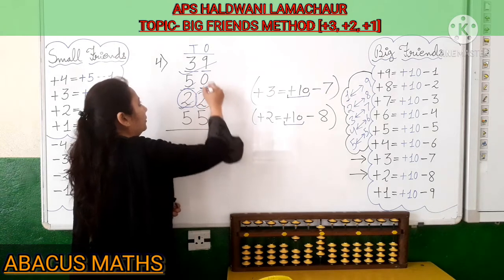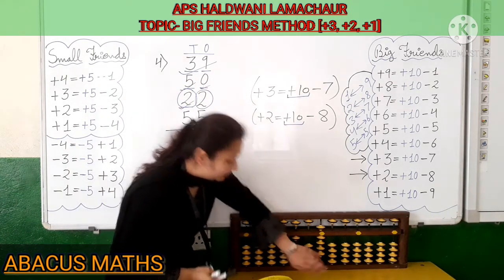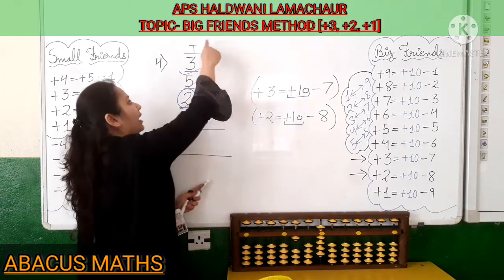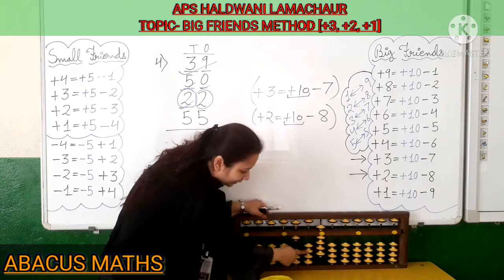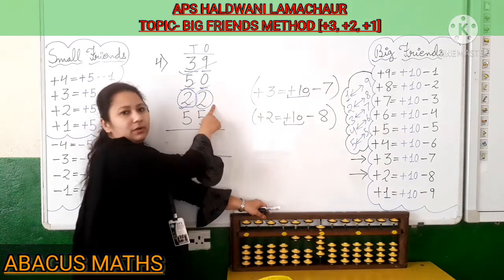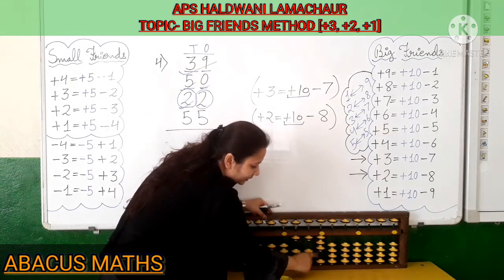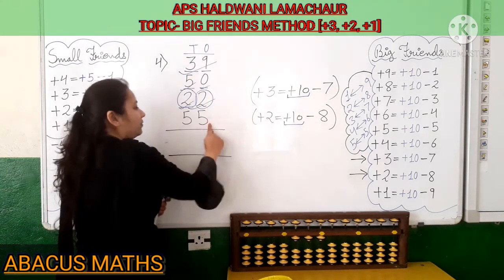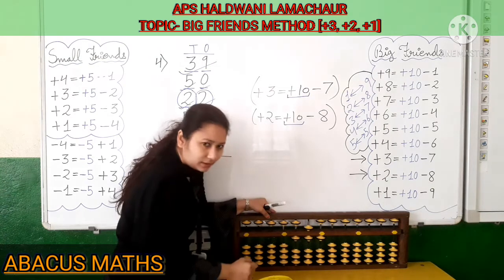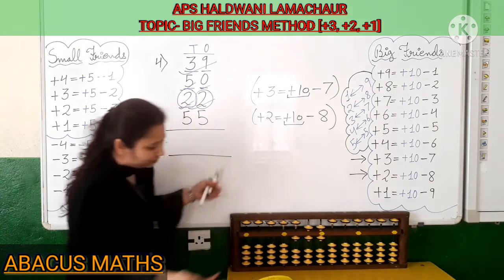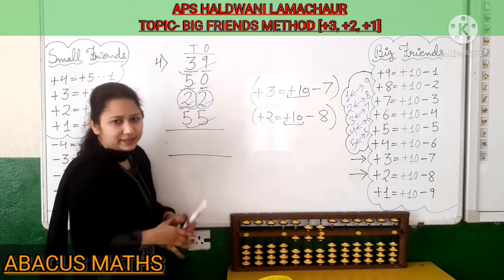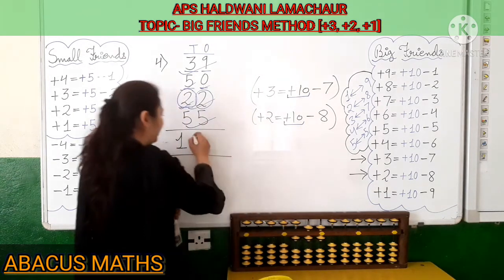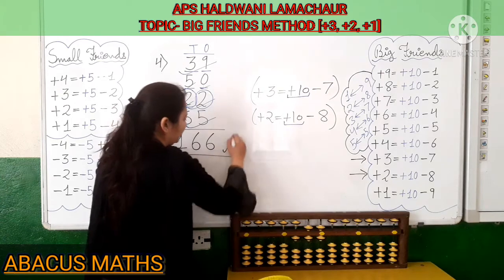Now add this 2 in the 1's slot. In the 1's slot, 4 is already added. For this 2, apply the big friend formula — plus 10 minus 8. Since 2 goes in the 1's slot, add 10 in the 10's slot, one rod up, and minus 8 from the 1's slot: 5, 6, 7. This is also done. Now add 5 in the 10's slot and 5 in the 1's slot. Your sum is completed. Count: 1 in the 100's slot, 5 and 6 in the 10's slot, and 5 and 6 in the 1's slot. So your answer is 166.